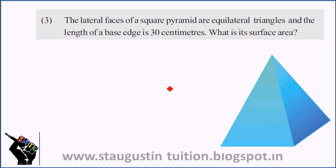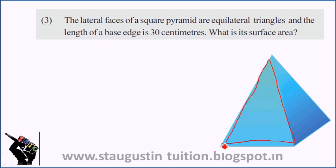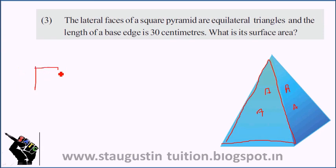So, this is a square pyramid. The lateral faces are equilateral triangles. A square pyramid has 4 equilateral triangular faces and a square base.